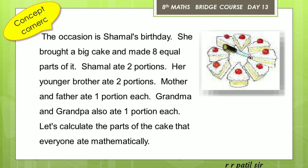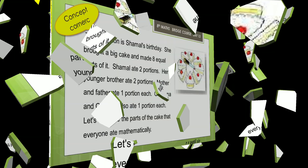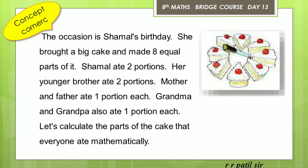Let us calculate the part of the cake that everyone ate mathematically. There were eight equal parts — Shamal had two parts, her brother had two parts, mother and father had one part each, and grandpa and grandma each had one portion.